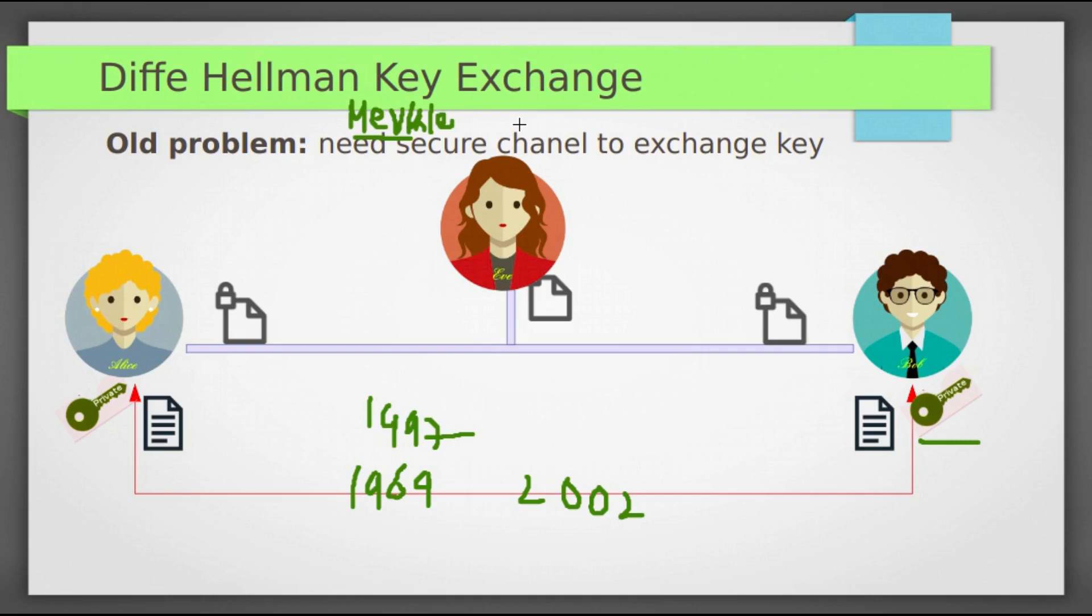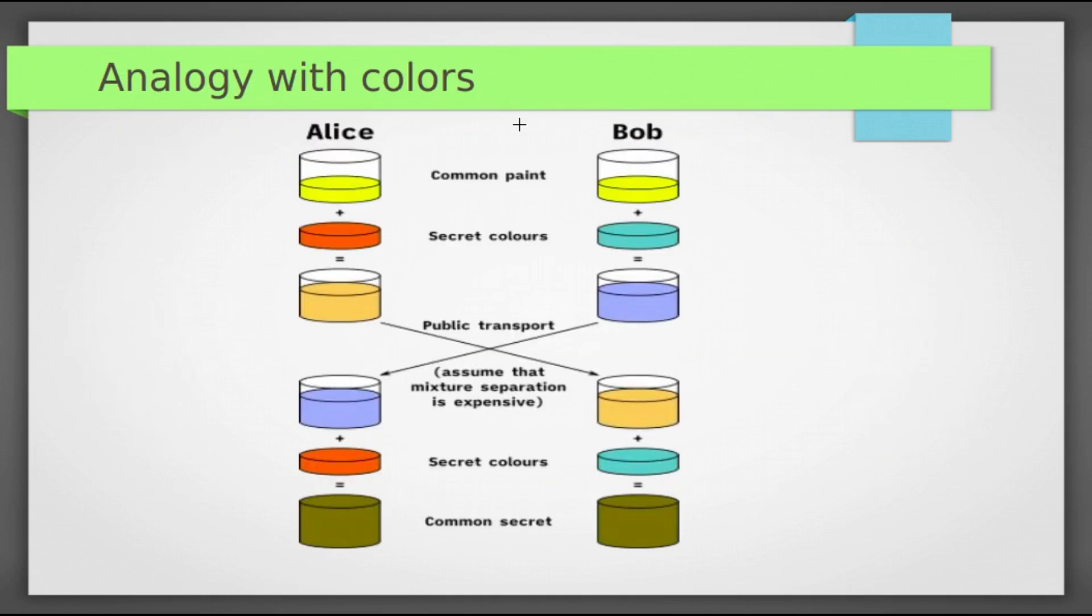Let us see general overview. This analogy illustrates the concept of public key exchange by using colors instead of very large numbers. Alice and Bob agree on some starting color. It need not be secret. In this example, this is yellow. Each person selects a secret color that they keep themselves. Alice choose orange and Bob choose sky blue.